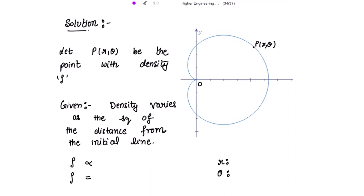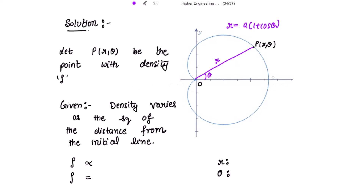So this is the cardioid R equal to A into 1 plus cos theta. Let P be the point having the coordinates R theta, and this is your distance R from the origin. This is theta, and on the initial line theta equals 0 degree here, and at here theta is equal to pi. Let me draw a perpendicular from the point P to this initial line and name this point as Q.